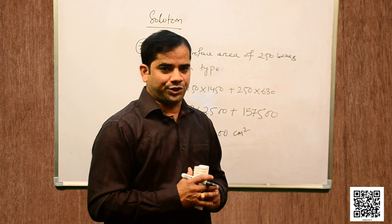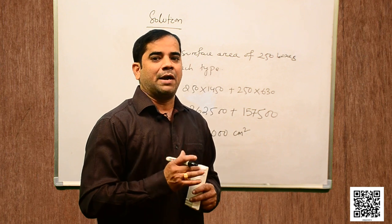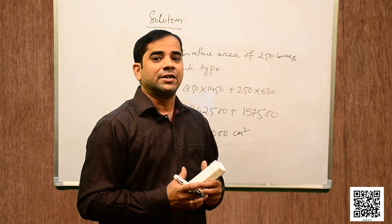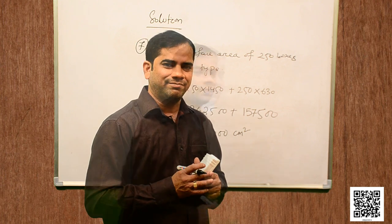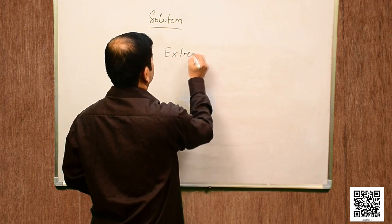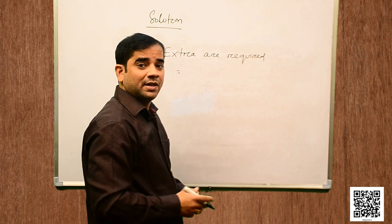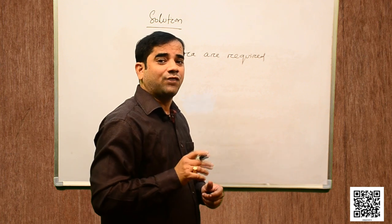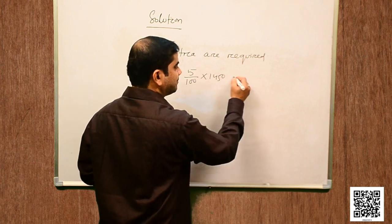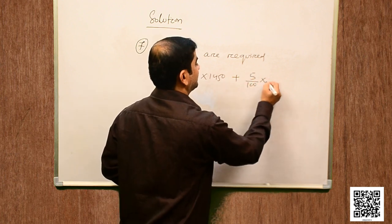As per the given question, extra area required for overlapping is 5% for each box. So extra area required = 5% of 1450 + 5% of 630.